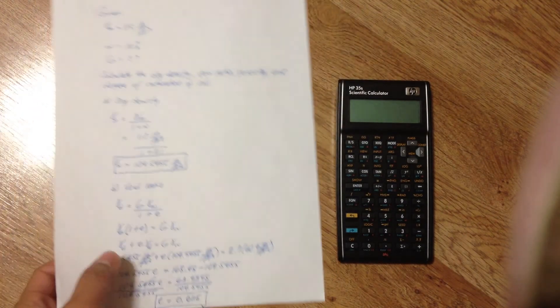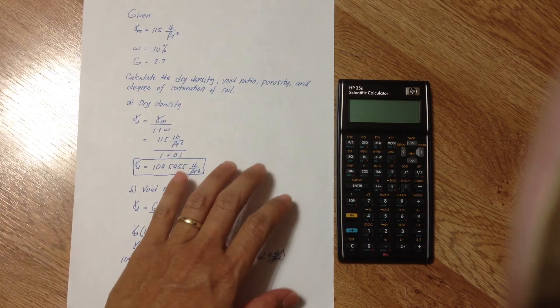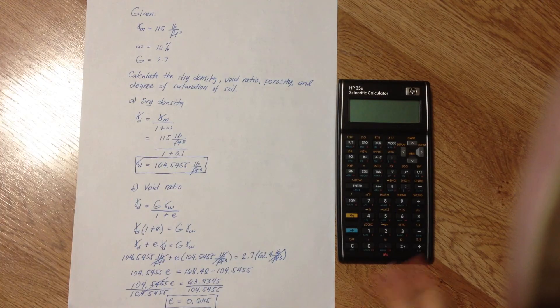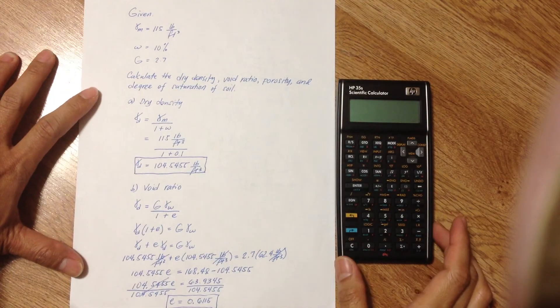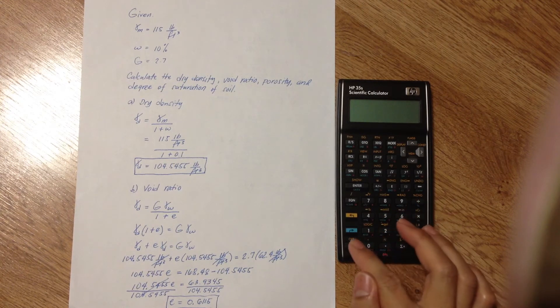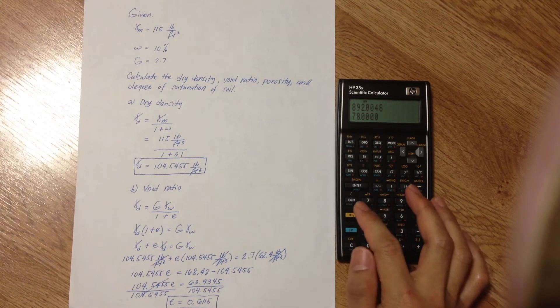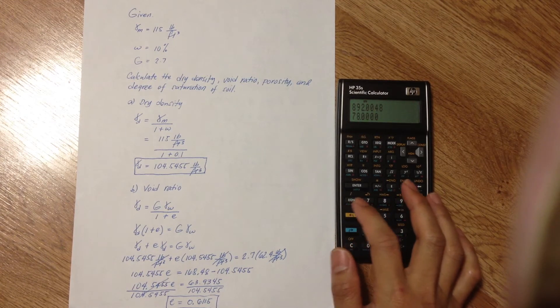Now, to use the HP35S with my equations, here's how we do it. First, turn on the calculator by pressing the C button and go to the equation list by pressing the EQN button.